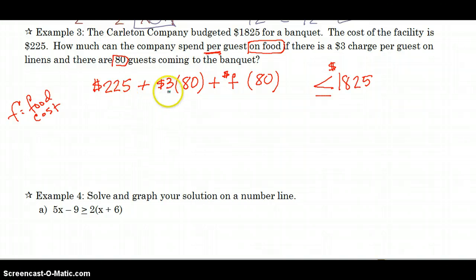All right. The cost of the banquet hall, the cost of linens, and this will be the cost per person for food. I'm solving for F. And we know that everything needs to stay less than or equal to 1825. So how do you eat an elephant? One bite at a time. So I'm going to start with taking care of 3 times 80, which is 240.